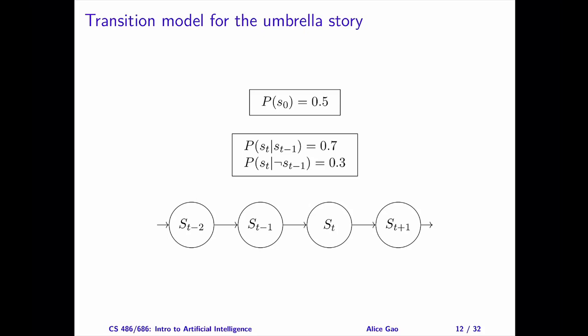That's everything on the transition model for the umbrella story. Let me summarize. After watching this video, you should be able to: define a k-order Markov chain, define the Markov assumption and describe some intuitions about this assumption, define a stationary process, and describe some advantages of choosing a stationary model. Thank you very much for watching. I will see you in the next video. Bye for now.